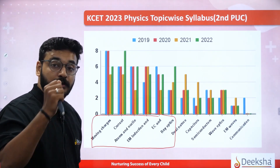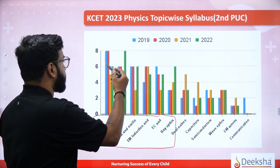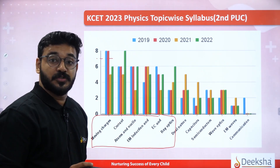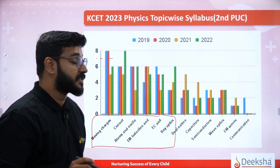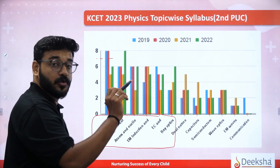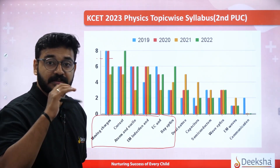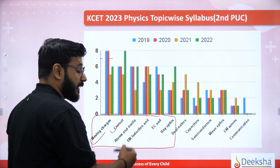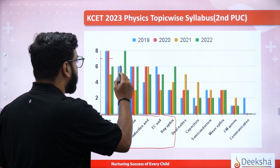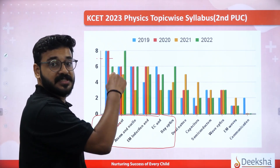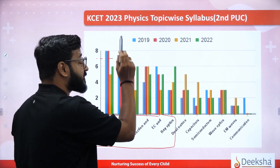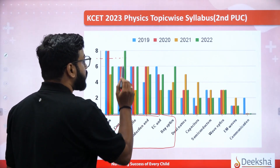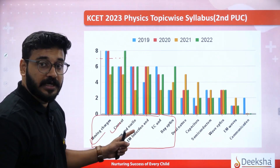Moving charges — every year, on average 7 to 8 questions are asked. Please don't forget this chapter. Current electricity is also very high priority — look at every year, around 6 questions. Last year, 8 questions were asked in current electricity circuit questions. So it is very important for current electricity.